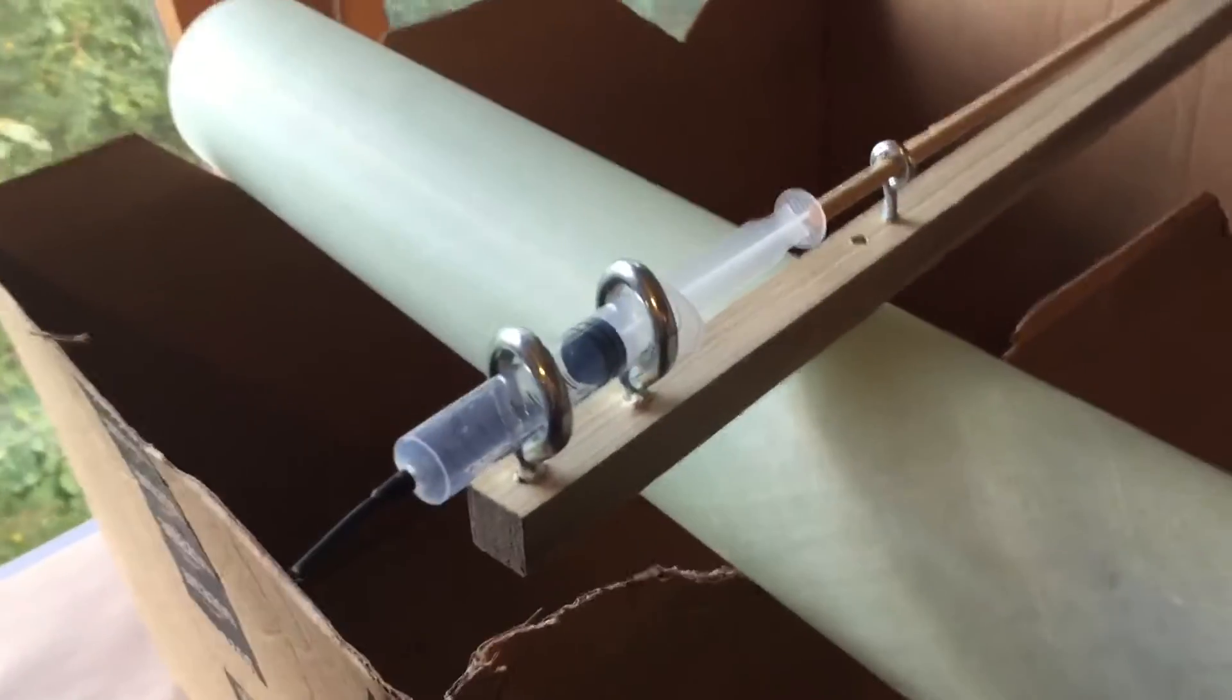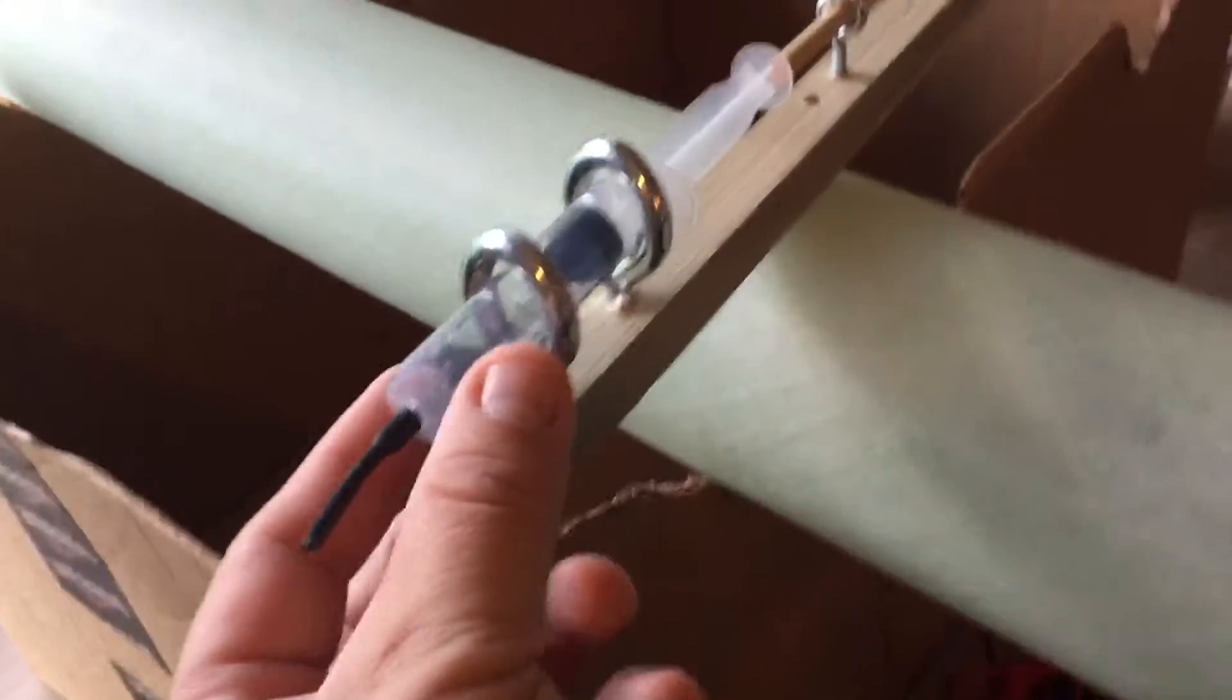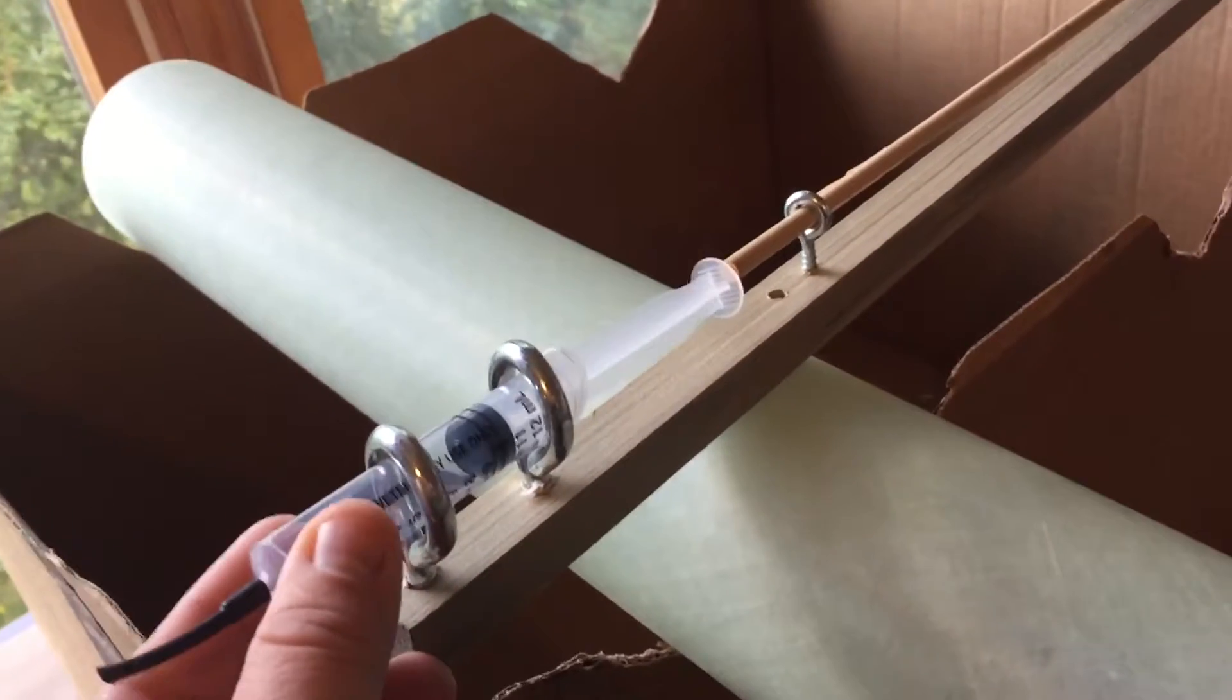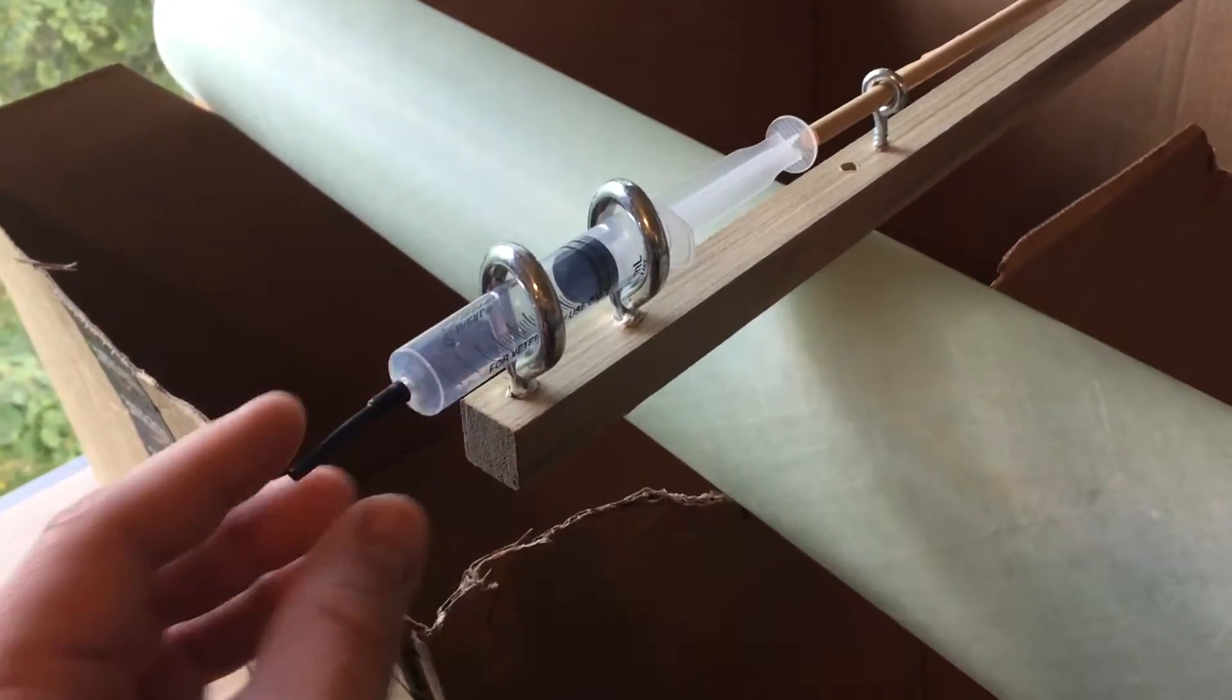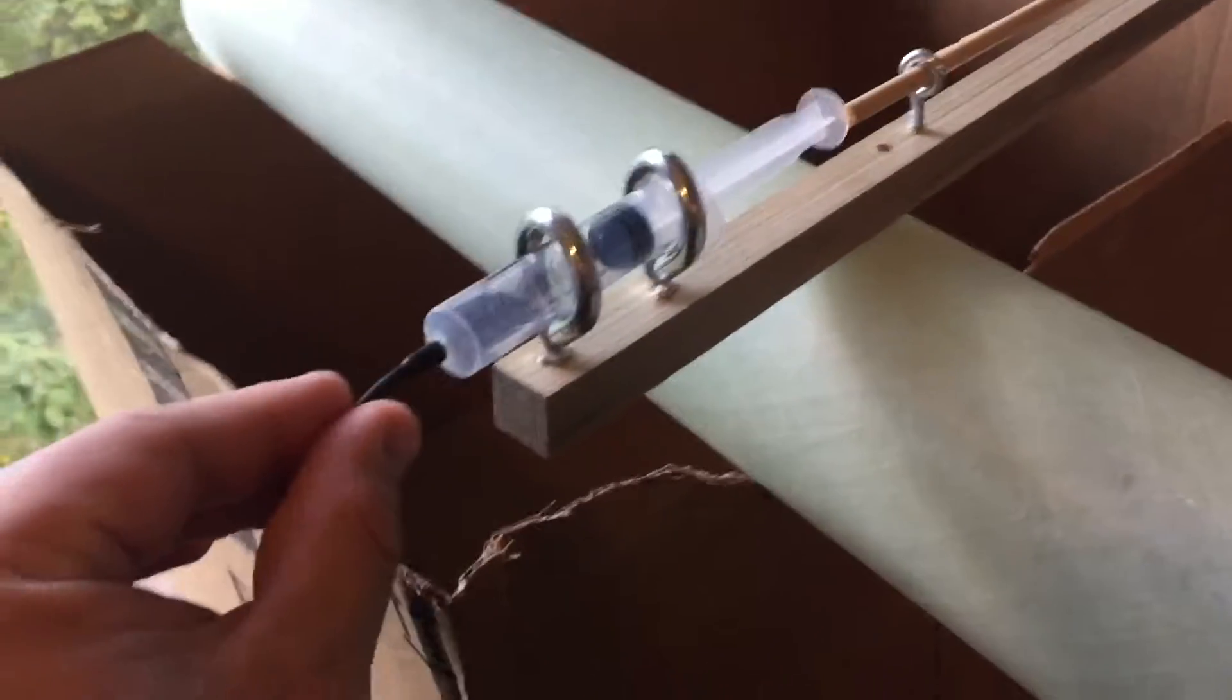All right, so here's my epoxy injection system. It's just a 12cc syringe for horses. You can get these at Tractor Supply. You use two nuts to hold it in place. This is heat shrink tubing.